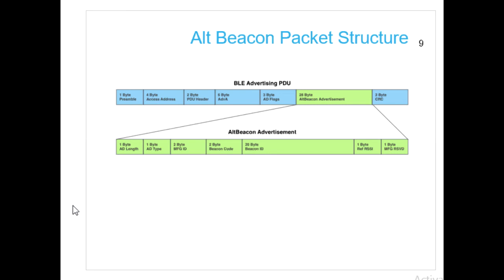AltBeacon was proposed for location tracking purposes and is very similar to iBeacon. The main difference is the company ID: for iBeacon it is 0x004C, and for AltBeacon it is 0xFFFF. In AltBeacon there is no major or minor — instead it directly has a beacon ID. It also has one byte for RSSI and one byte for manufacturer-reserved data. It also has a beacon code and manufacturing ID.